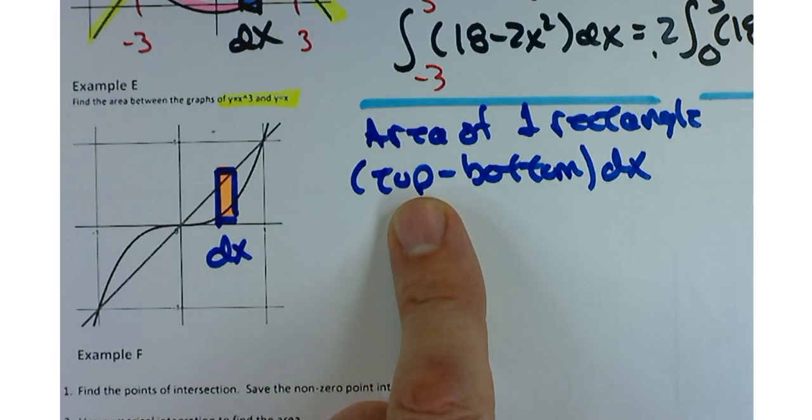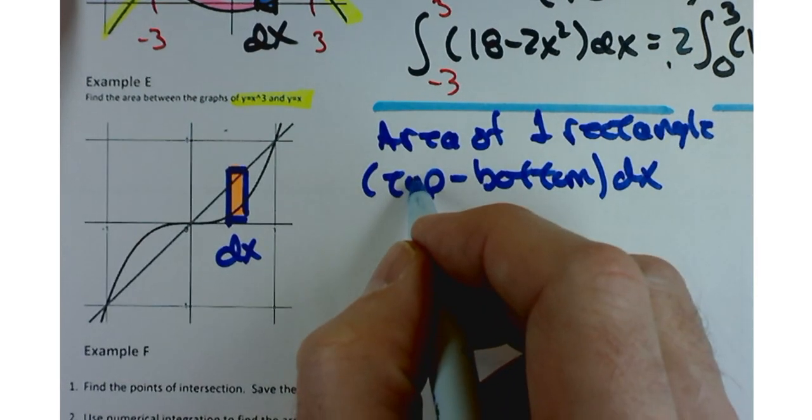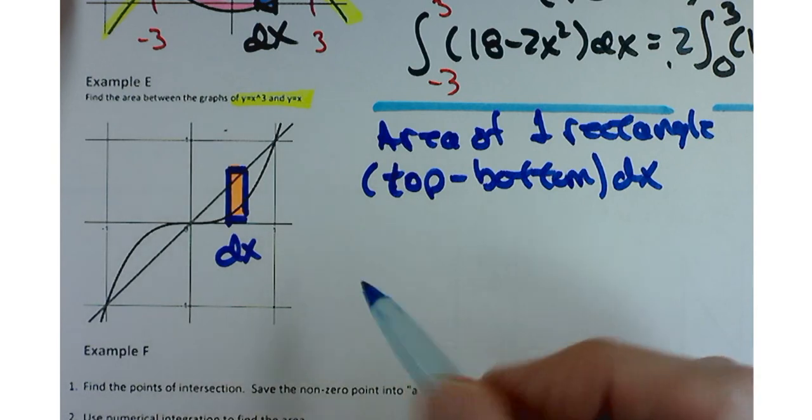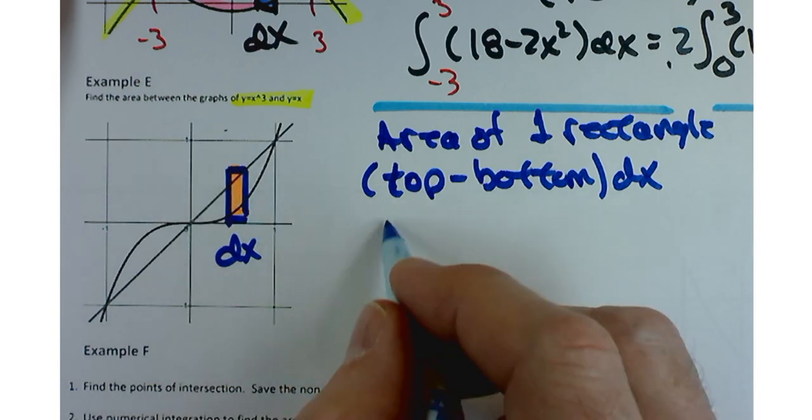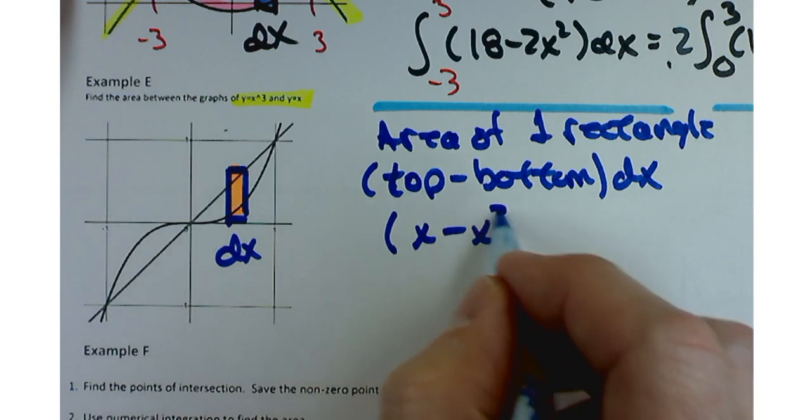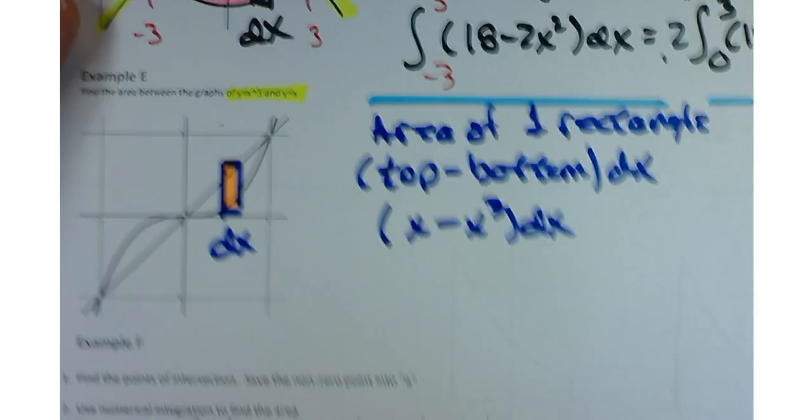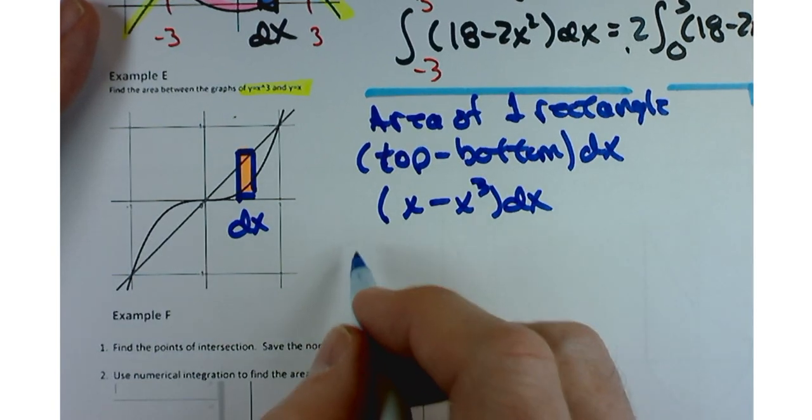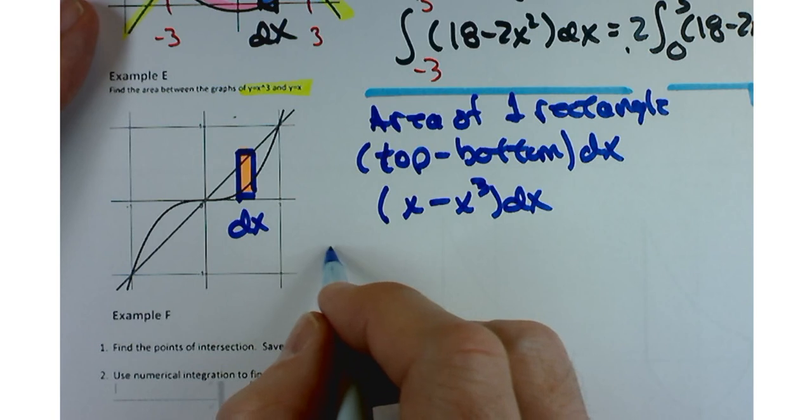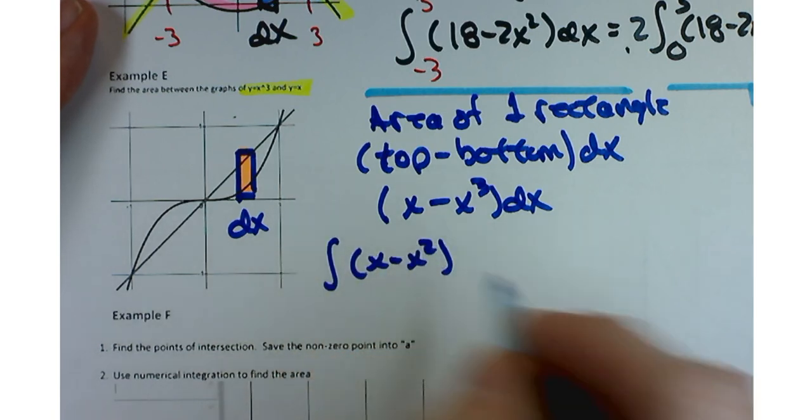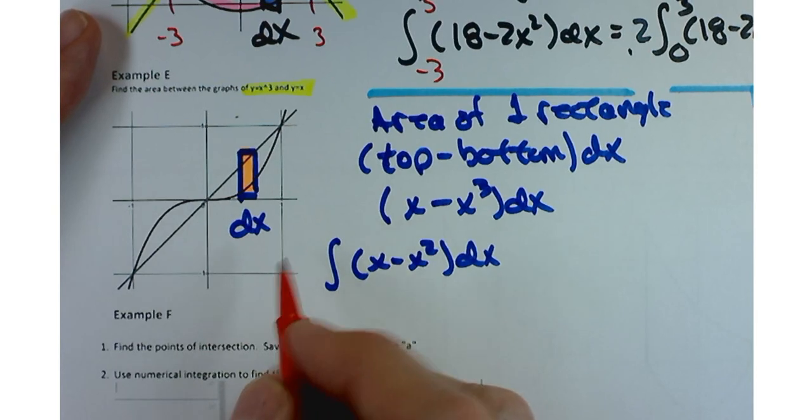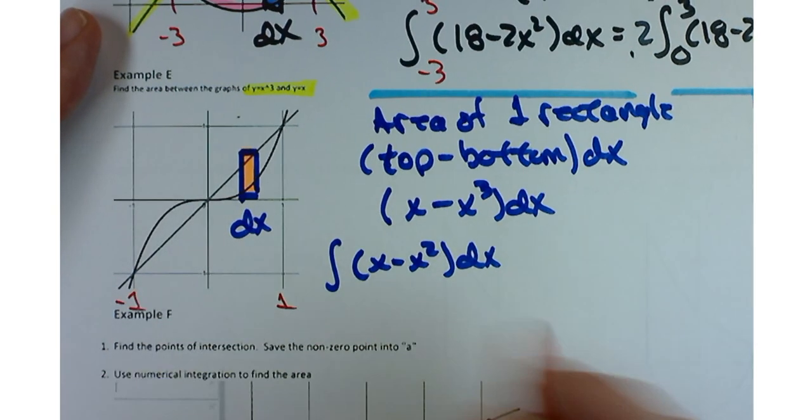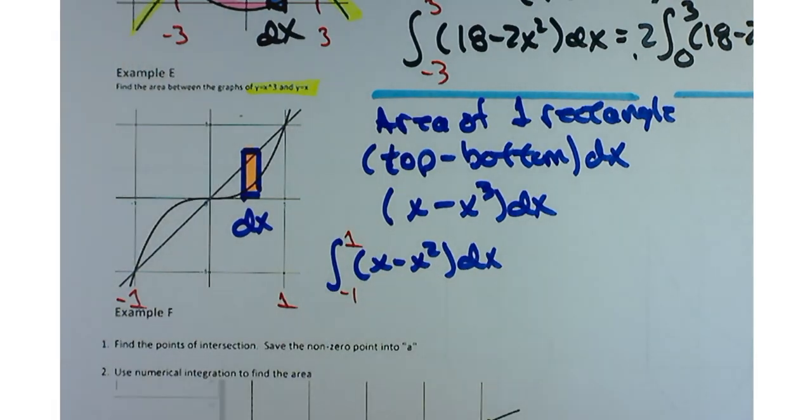Just like the last one, it's going to be top minus bottom. And it looks like we're still going to be able to take a dx slice. What's the top function? Top minus bottom. Is it x cubed or x? Which one's the top function here? x. Bottom one would be minus x cubed. And this one's a little bit more user-friendly than the last one. You can kind of see your limits of integration here. It's going to be from negative one to one.